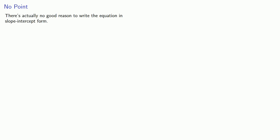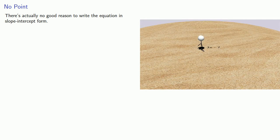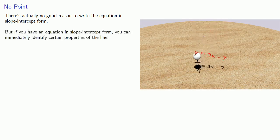Because the problem asks us to, we should rewrite this in slope-intercept form by expanding and simplifying. In the grand scheme of things, there's actually no good reason to write the equation in slope-intercept form. Point-slope form is the easiest and fastest way to write the equation of a line. On the other hand, if an equation in slope-intercept form should come your way, you can immediately identify certain properties of the corresponding line.